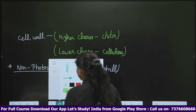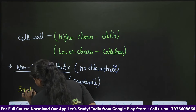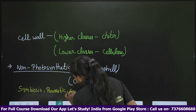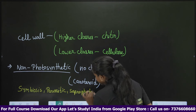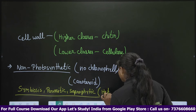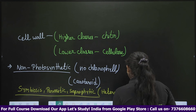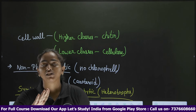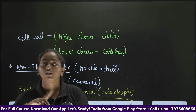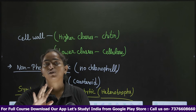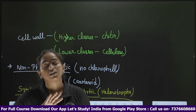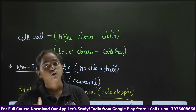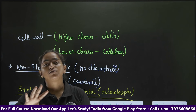Since fungi are non-photosynthetic, their mode of nutrition includes symbiosis, parasitism, and saprophytic nutrition. They are heterotrophs. They have carotenoids, which provide different colors, but no chlorophyll. They have chitin instead of cellulose in higher groups, though lower groups have cellulose. So fungi follow heterotrophic, parasitic, and symbiotic modes of nutrition.